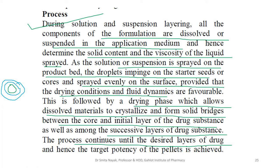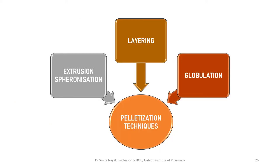This process continues until the desired layers of drug are coated onto the inert pellets and the target potency is achieved. So this is a very simple coating process in which an inert core is coated with multiple layers of the drug solution and then allowed to dry, so that the drug crystallizes and is deposited onto the surface of the inert core, forming bridges. We have thus completed the extrusion spheronization and layering processes of pelletization — a very simple technique requiring no specialized equipment.